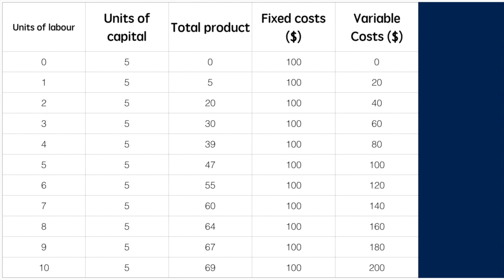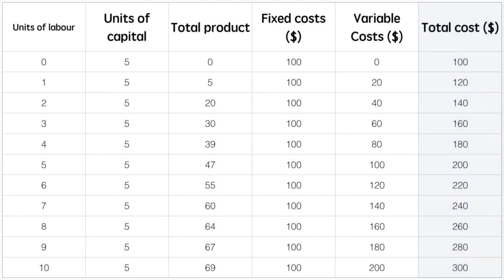However, as output rises, variable costs rise. We multiply the $20 by the units of labour to arrive at our total variable costs. The sum of our total fixed costs and total variable costs is our total cost of production — the last column represents the sum of the two cells preceding it to the left. $100 plus $20 equals $120. We'll complete the rest of the table using this information.